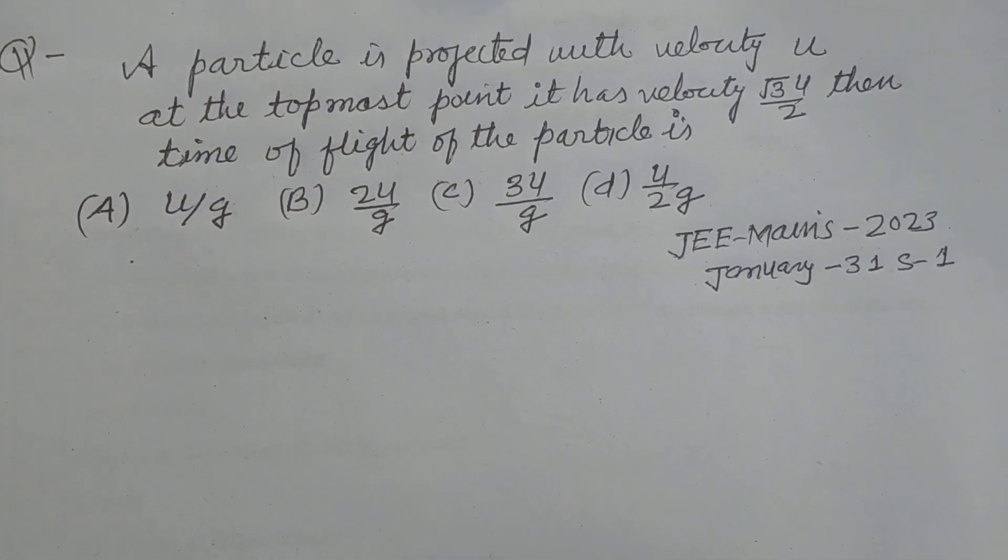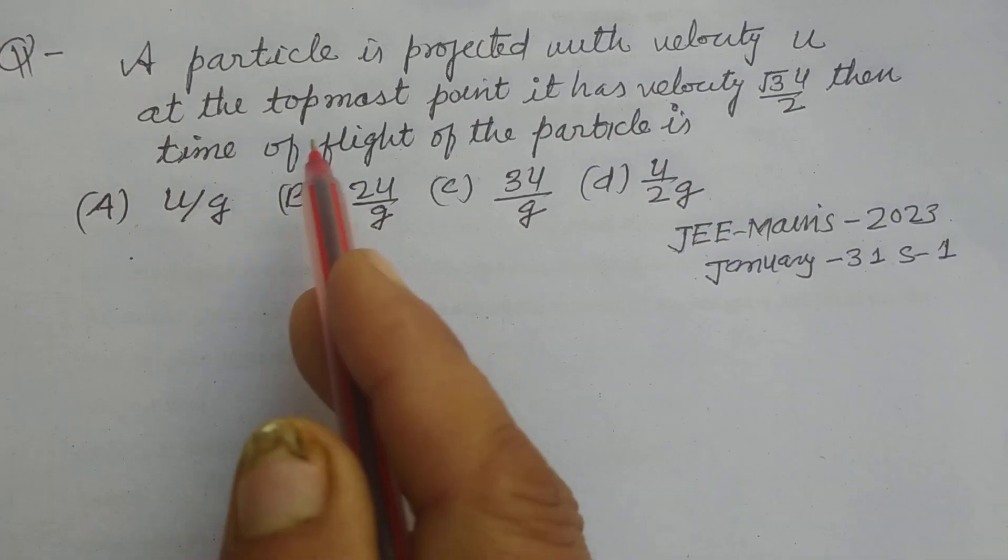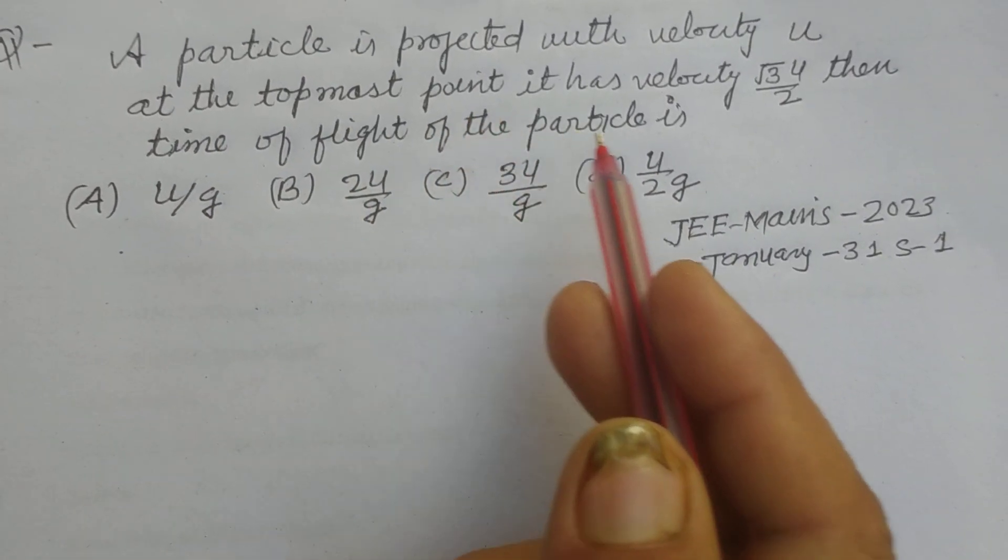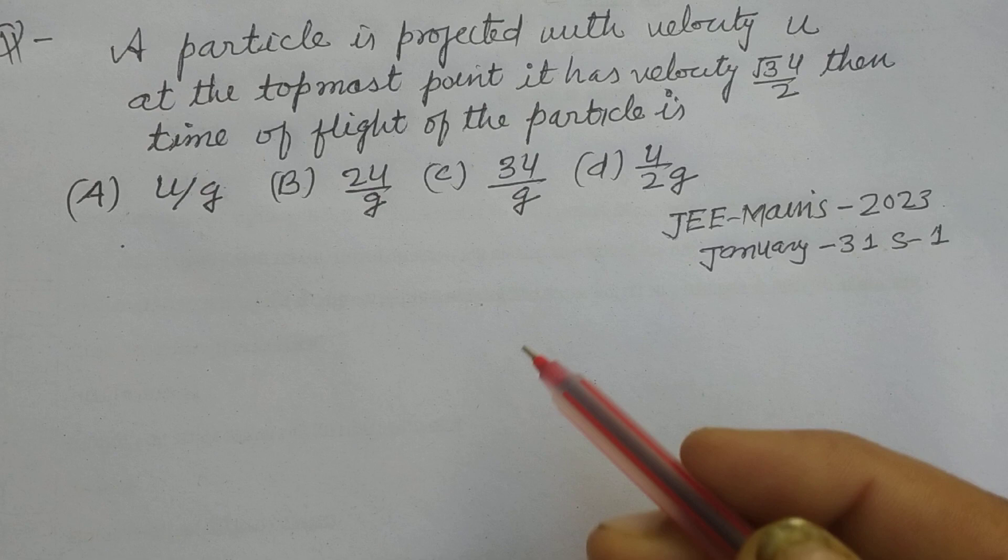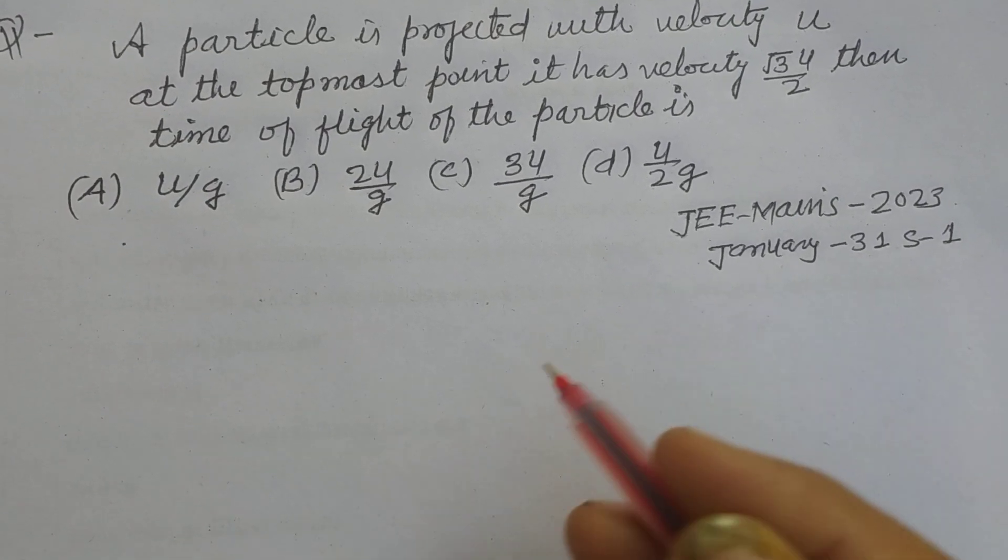A particle is projected with velocity u. At the topmost point it has velocity √3u/2, then time of flight of the particle is?